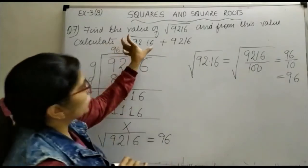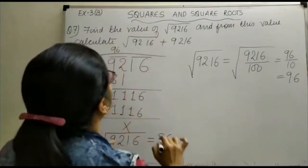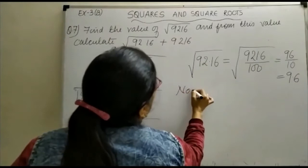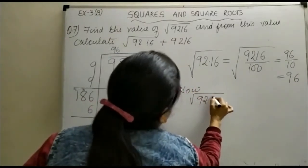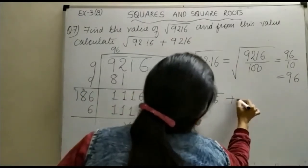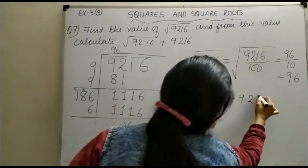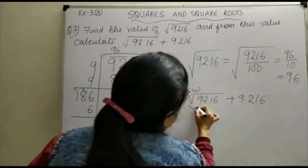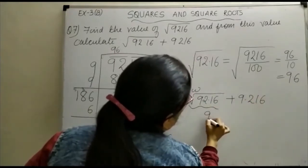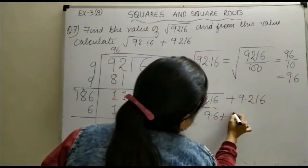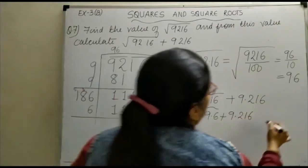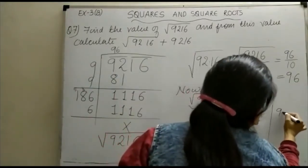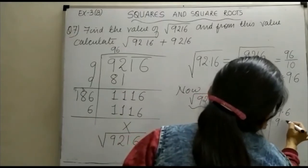Now we can write √92.16 + 9.216. This value is 9.6 + 9.216. Add 9.6 and 9.216, which gives us 18.816.